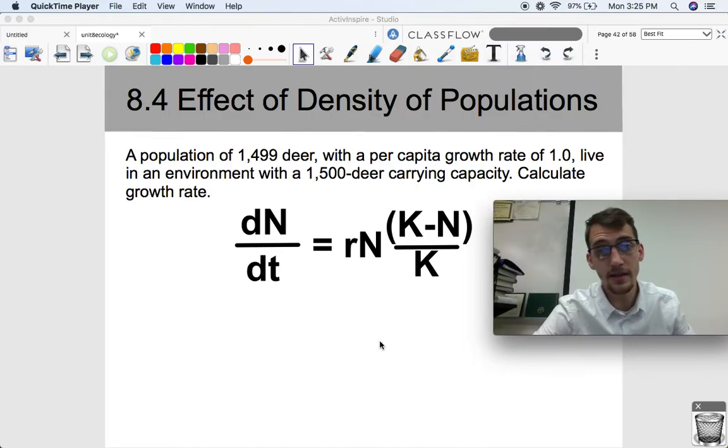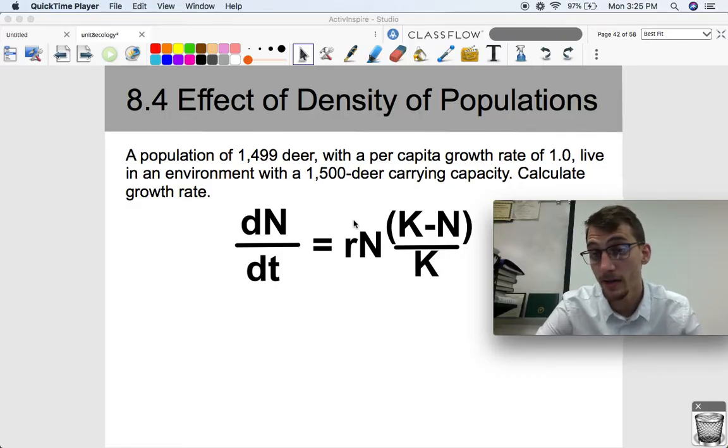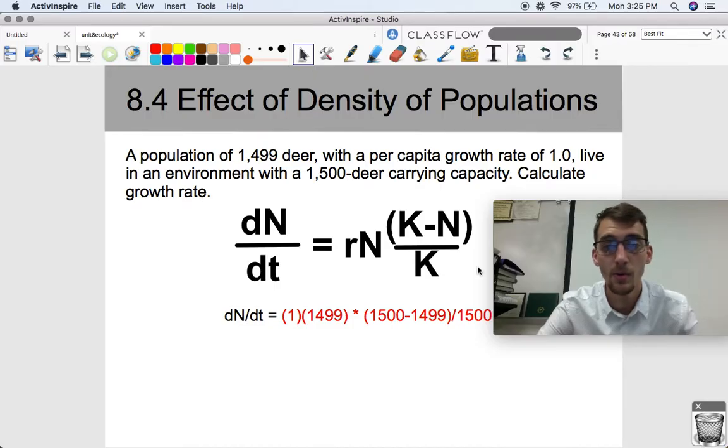So now take a look at this scenario. A population of 1,499 deer with a per capita growth rate of 1, live in an environment with a 1,500-deer carrying capacity, same environment. Calculate the growth rate. Now what is it going to be? If this is following a logistic growth curve, we're pretty close to the carrying capacity. What's the growth rate going to look like?